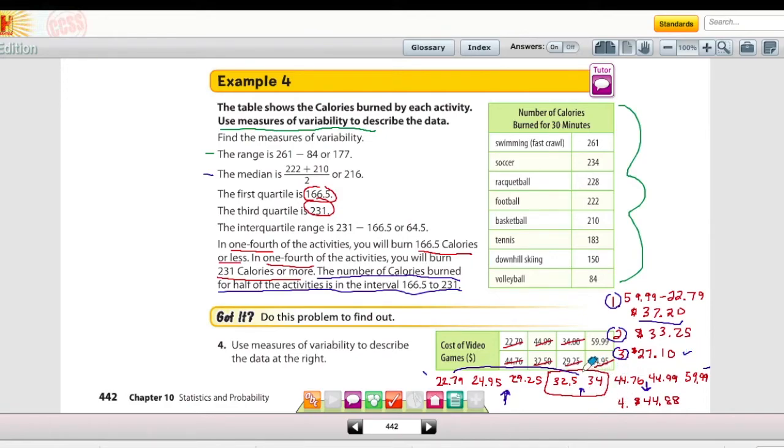For number four, the third quartile is taking everything to the right of the median. In this case, what's between 44.76 and 44.99? It's 44.88. Use your calculator to double-check that. Add them together and divide by two.